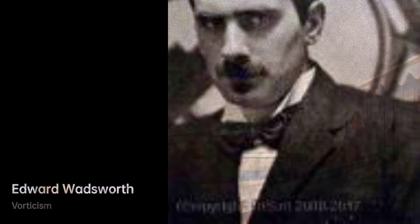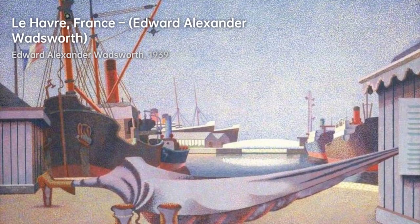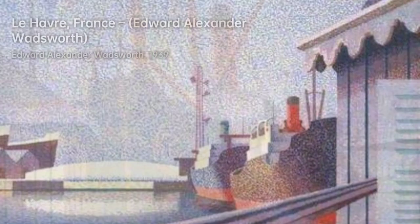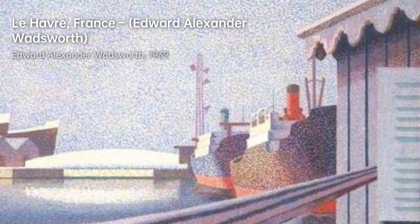During the First World War, Wadsworth played a significant role in designing dazzle camouflage for the Royal Navy. This innovative technique used bold and contrasting geometric patterns to confuse enemy submarines. Even after the war, Wadsworth continued to paint nautical themes, showcasing his fascination with maritime subjects.